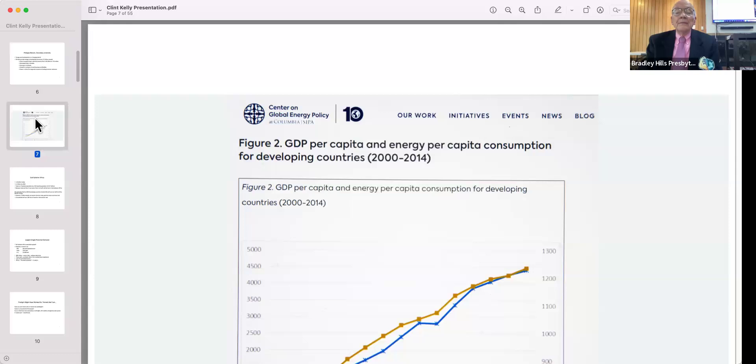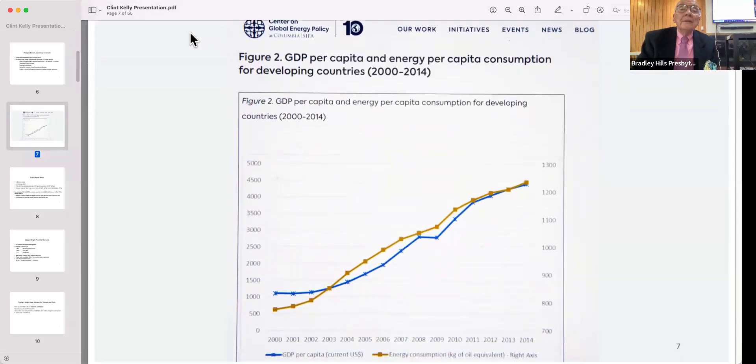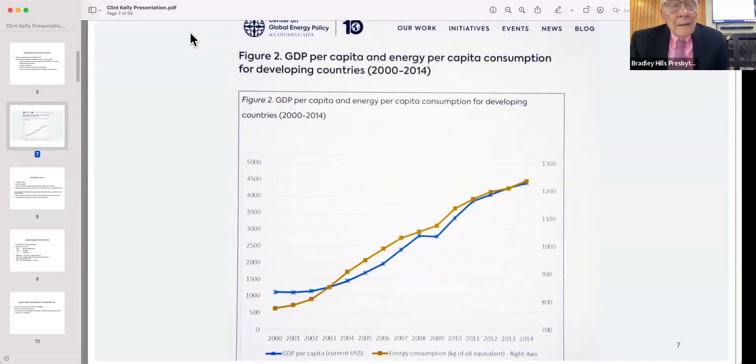This is a chart contained in his work. GDP per capita and energy per capita consumption are about as closely correlated as you'll find in the real world.